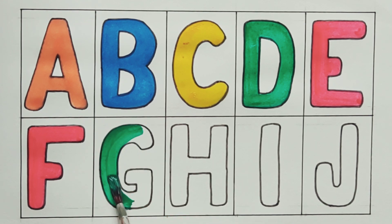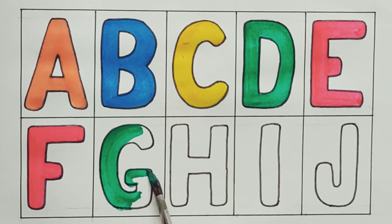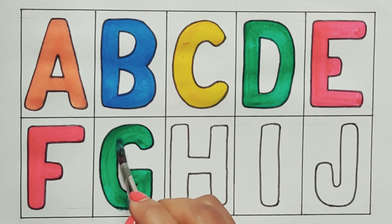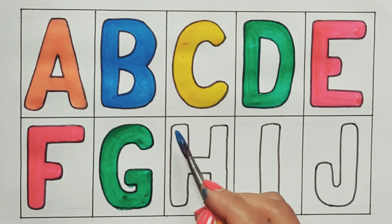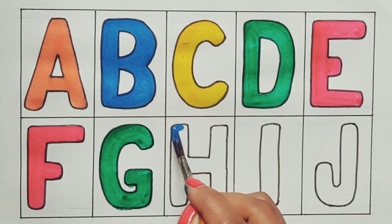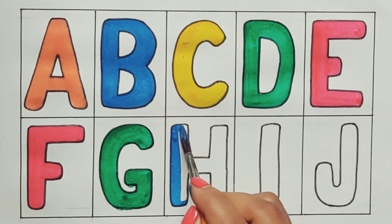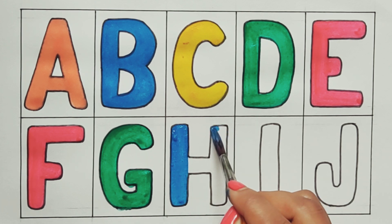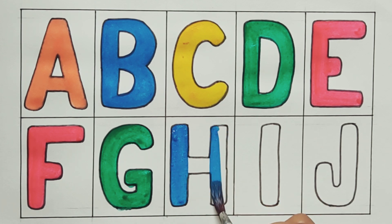A, B, C, D, E, F, G, H, I, J, K, L, M, N, O, P, Q, R, S, T, U, V, W, X, Y, and Z. Now I know my ABCs, next time won't you sing with me?